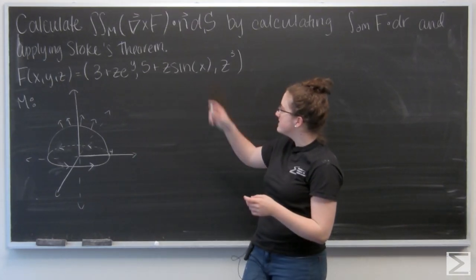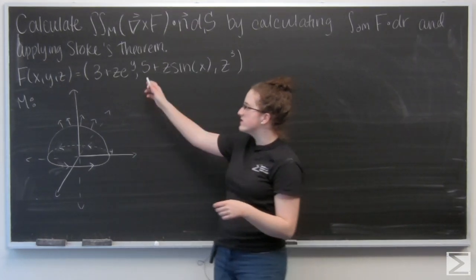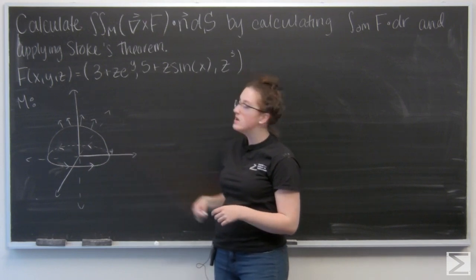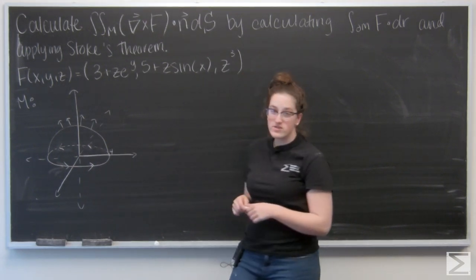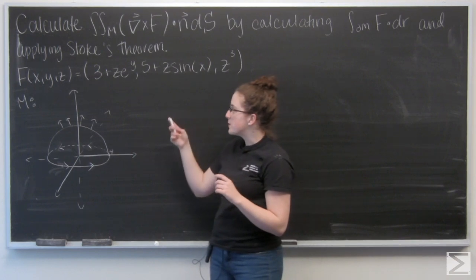For this question, I'm asked to calculate the flux of my given vector field F over the surface M by calculating the line integral of F around the boundary of M and applying Stokes' theorem.